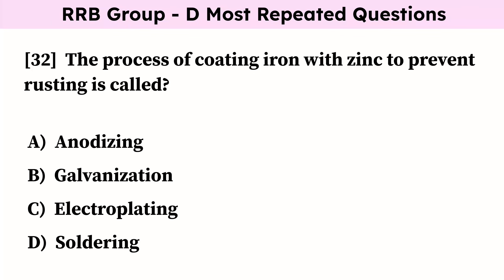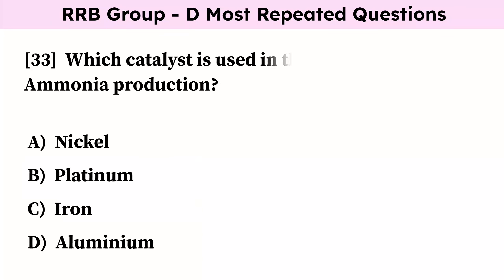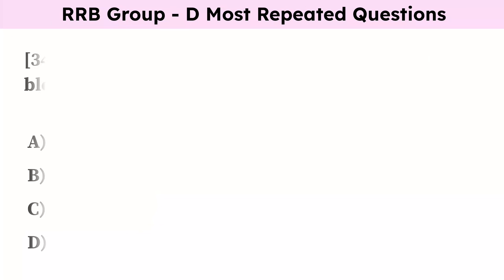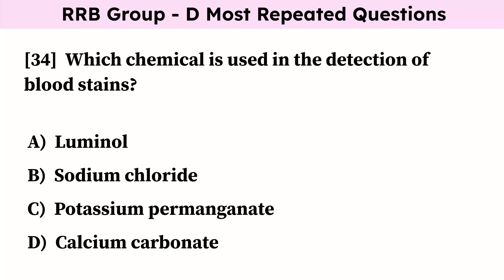The process of coating iron with zinc to prevent rusting is called? Correct answer is galvanization. Which catalyst is used in the Haber process for ammonia production? Correct answer is iron. Which chemical is used in the detection of blood stains? Correct answer is luminol.